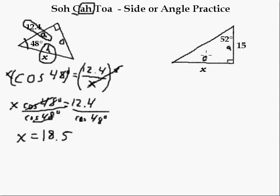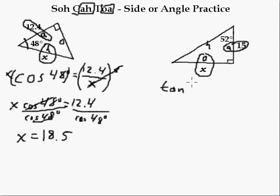So this is O, this is A, this is H. Now once you get the hang of this, you can start to fill it in a little bit faster. If you're still slow, start with O, then do H, then do A. O and A — O and A tells me to use tan. So I'm going to use the tan of the angle this time. The angle is 52 degrees, and that equals X over 15. X is on top, it makes it easier that way.